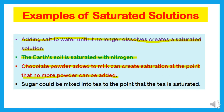Number four: sugar can be mixed into tea to the point that the tea is saturated. Even if you add sugar in a small amount at that point, it will not dissolve. The sugar particles will collect at the bottom of the cup or container.